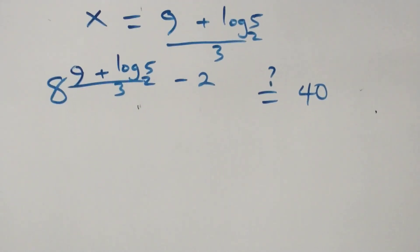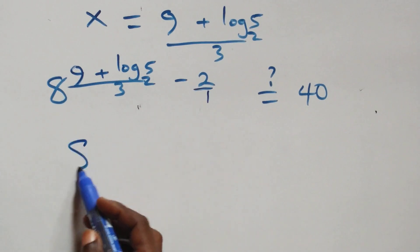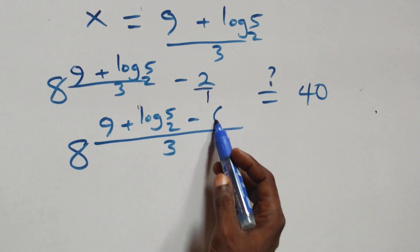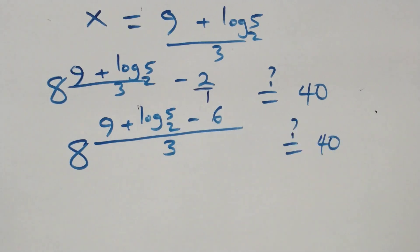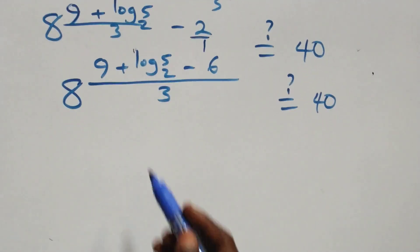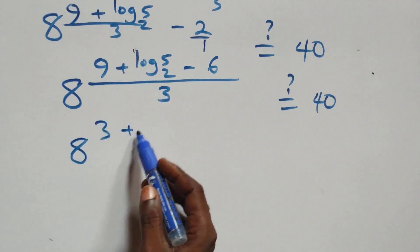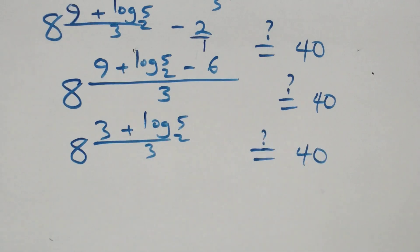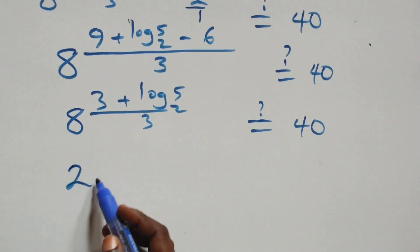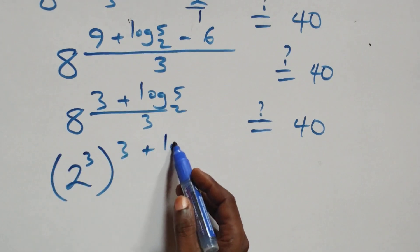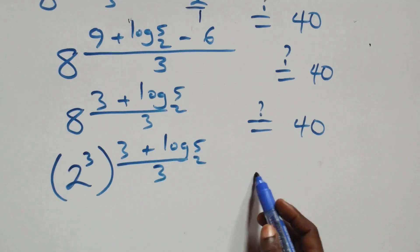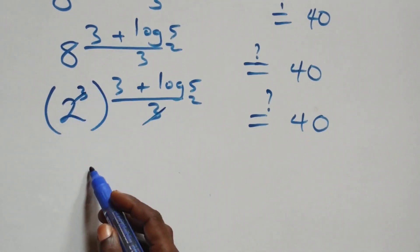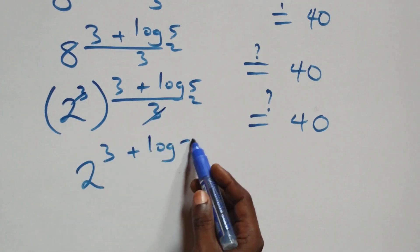We have 8 raised to power (9 plus log₂5 minus 6) over 3. Simplifying, 9 minus 6 equals 3, so we have 8 raised to power (3 plus log₂5) over 3. This can be expressed as 2 raised to power 3, all raised to the power (3 plus log₂5) over 3, which equals 2 raised to power (3 plus log₂5). Is this equal to 40?